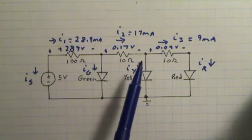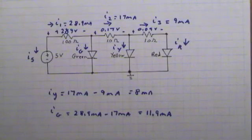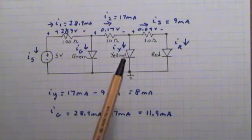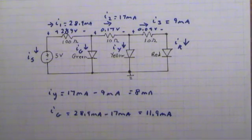Now for the green and yellow LEDs, we have three currents to account for at a node. For the yellow LED, applying KCL at this node, which we had previously called node C, the yellow LED current has to satisfy KCL at that node, which means that its current is 17 milliamps minus 9 milliamps, or 8 milliamps. And likewise, applying KCL at what we had previously called node B, for the green LED, its current by KCL must be equal to 28.9 milliamps minus 17 milliamps, or 11.9 milliamps.